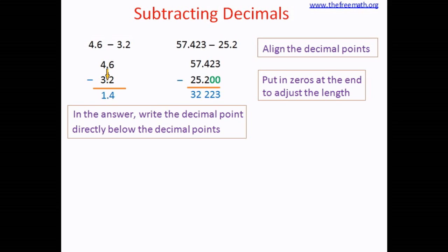Continuing: 4 minus 2 equals 2, 7 minus 5 equals 2, and 5 minus 2 equals 3. Let's put the decimal point in the answer, so our answer is 32.223, or we can call it 32 and 223 thousandths.